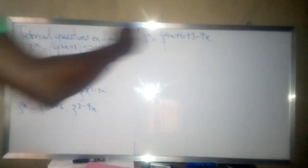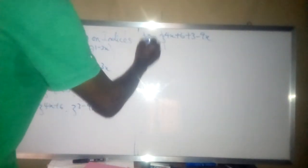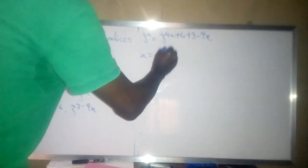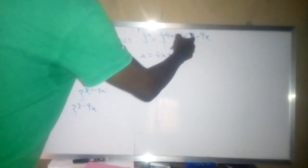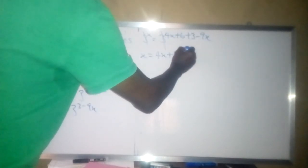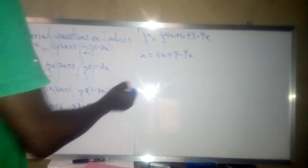So these three will be cancelled because they are equal to each other, the powers. So we want x is equal to 4x plus, because 6 plus 3 is 9, then minus 9x. Collect like terms.